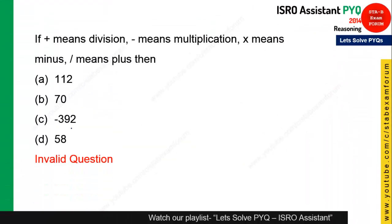Coming to the next question — this question was in the question paper but is invalid, because no equation is given. Some equation should be given involving plus, minus, or multiply operations, then you can answer it. So this question is invalid in that paper.